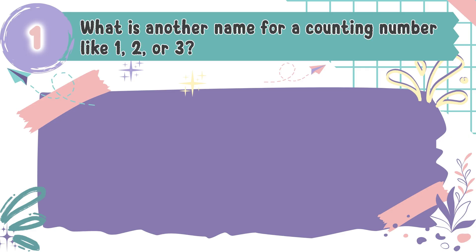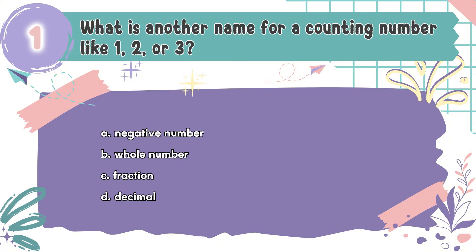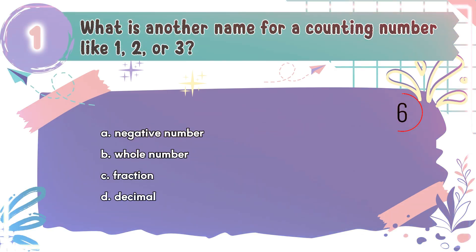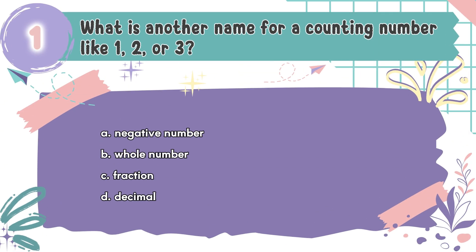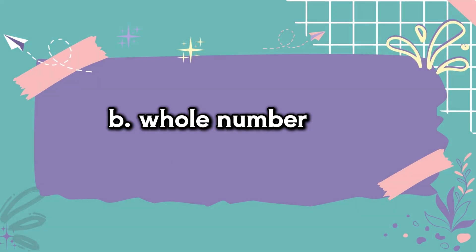Question number 1: What is another name for a counting number like 1, 2, or 3? The choices are A. Negative number, B. Whole number, C. Fraction, D. Decimal. The correct answer is B. Whole number. Whole numbers are the basic counting numbers 0, 1, 2, 3, and so on that we use every day.